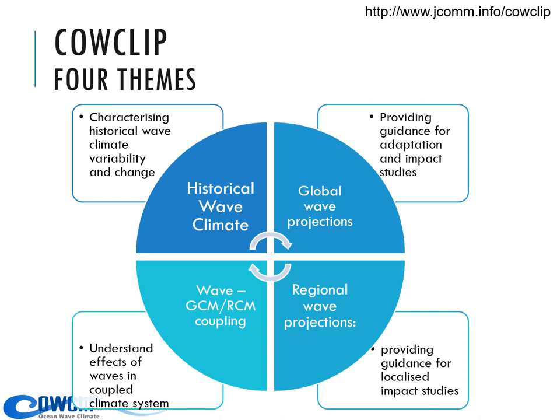COWCLIP has four groups. One is the historical wave climate, where we want to make a dataset of long-term wave hindcast results, which is important to validate or compare with observed wave datasets. Group two and group three are wave climate projections — one at global scale and the other at regional scale. The last component is the development of coupling between the global climate model and wave model, which is important to estimate the feedback of the wave field to atmospheric circulation.